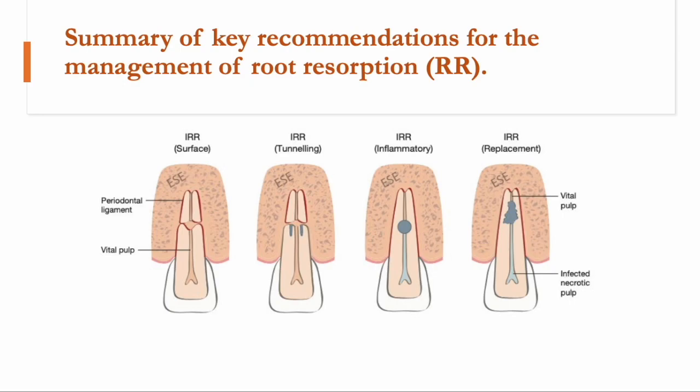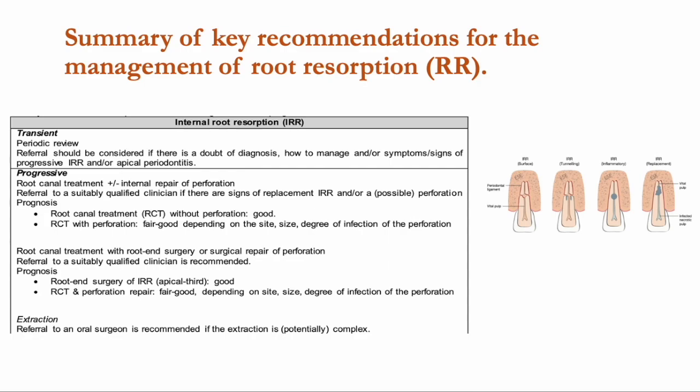The key recommendation for the transient type is periodic review, requiring annual clinical assessment such as pulp sensitivity testing and radiographic monitoring to ensure early detection of possible complications. For the progressive type, treatment aims to disinfect the root canal system and eliminate the vital apical pulp tissue sustaining the internal resorption. Treatment options include root canal treatment with or without internal repair of any perforation, root canal treatment with surgical repair of any perforation, and extraction in irreparable cases.